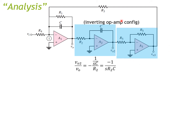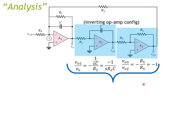Then for the next op-amp, also an inverting configuration, VO3 over VO2 — here you have R5 over R5, which cancel, yielding negative 1. Combining these two ratios, VO2/VO and VO3/VO2, gives the ratio VO3 back to VO, which equals 1 over s·R2·C.